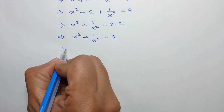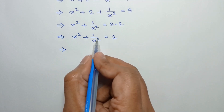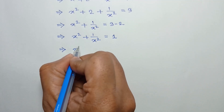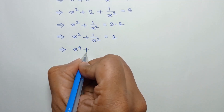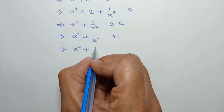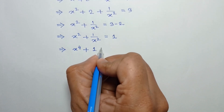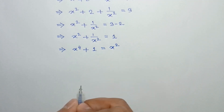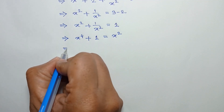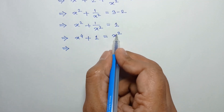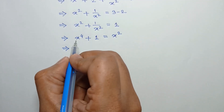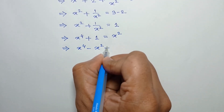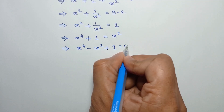Now, if we multiply both sides by x square, we can write x square times x square is x to the power 4 plus 1 over x square times x square is 1, which is equal to 1 times x square, equal to x square. Taking this x square to the left side, we can write x to the power 4 minus x square plus 1 is equal to 0.